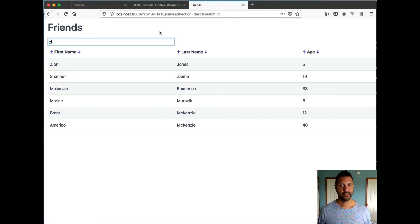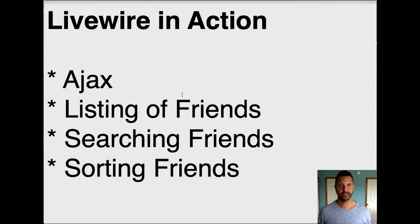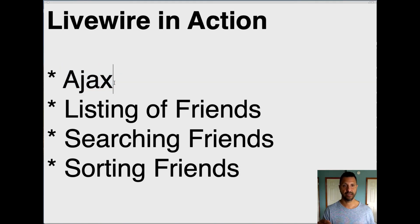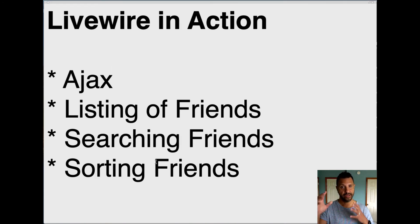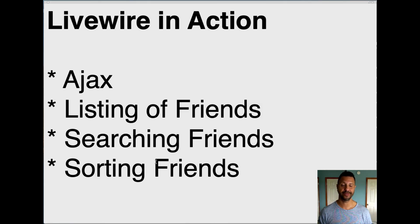That pretty much concludes our interaction and digging into Livewire. In this lecture, we were able to inspect our Ajax requests in the browser's network inspector, get a listing of friends, searching of friends, and sorting of friends. Keep in mind we're interacting with the page without any page refresh — it's all doing Ajax calls behind the scenes and updating the content dynamically. Really, really cool. That'll do it for now — have a good day, bye!